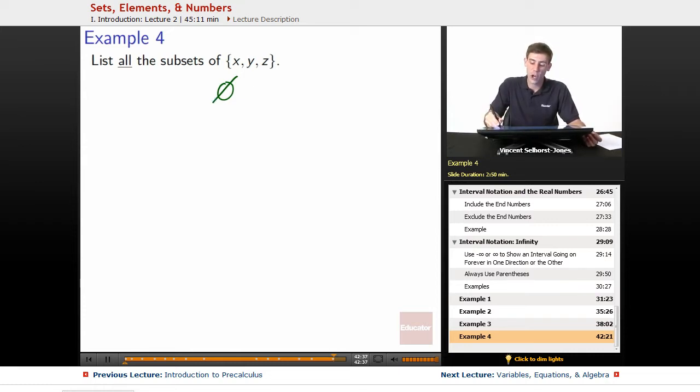Next, let's look at all the subsets that have one element inside of it. So x is going to be a set just on its own, and that's a subset. Another one would be y, that's another subset. Another one would be z. So those are all of the sets that are one element long and are subsets of x, y, z.